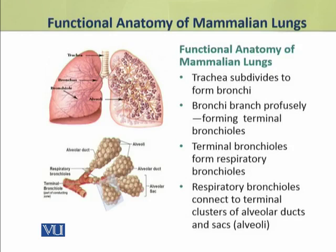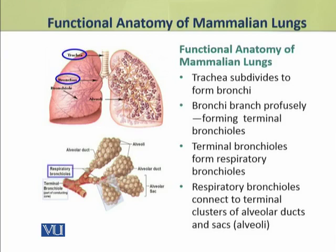In this branching network, the trachea subdivides and it forms bronchi. These bronchi branch profusely, and after this branching they form the terminal bronchioles. Terminal bronchioles further divide and they form respiratory bronchioles. Respiratory bronchioles are connected to a cluster of alveolar ducts or sacs which are called alveoli.